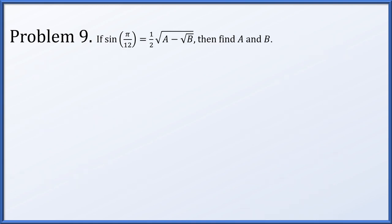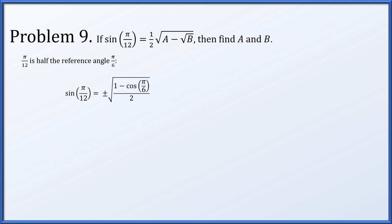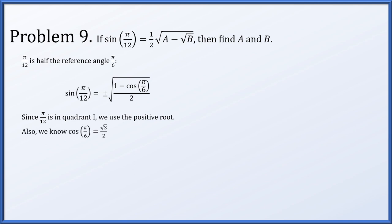In problem 9, if we assume the sine of π over 12 is 1 half the square root of a minus root b, find the correct values for a and b. π over 12 is half of the reference angle π over 6, so let's use the half angle formula for sine. Sine of π over 12 will be the positive square root of 1 minus cosine of π over 6, all over 2 — positive because π over 12 is in quadrant 1. The cosine of π over 6 is root 3 over 2, so sine of π over 12 is the square root of 1 minus root 3 over 2, all over 2.